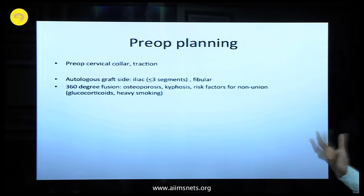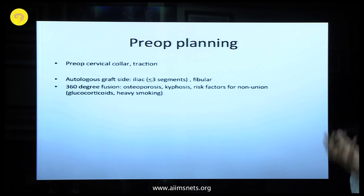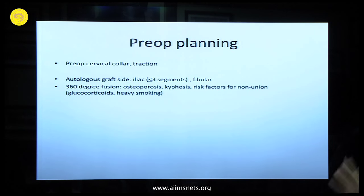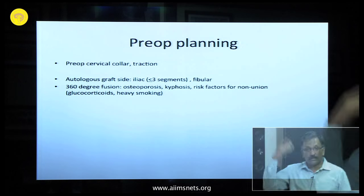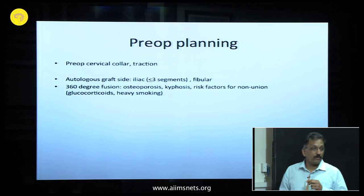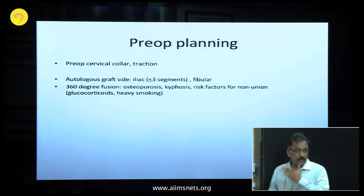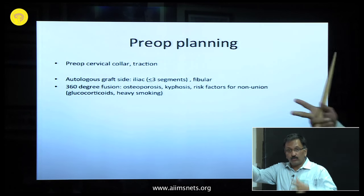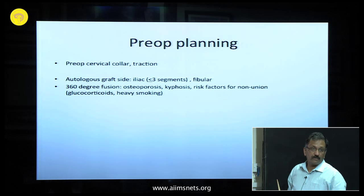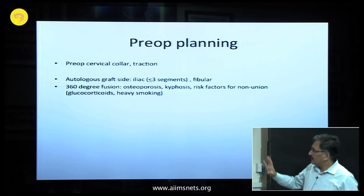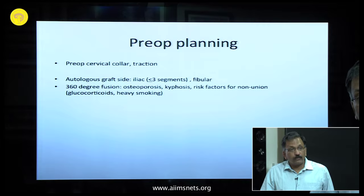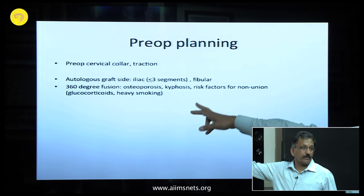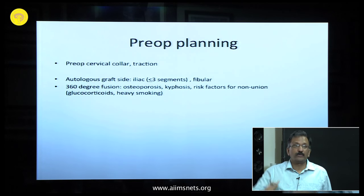When would you go in for a 360-degree fusion? In cases of severe osteoporosis, significant kyphotic deformity, or several risk factors for non-union. For example, if somebody is on glucocorticoids or has severe rheumatoid arthritis, short segment fusions do not work — you need a complex long segment fusion. When would you require a fibular graft rather than an iliac graft? When it is more than a three-level long segment, because an iliac graft will curve and you cannot mold it into place adequately.